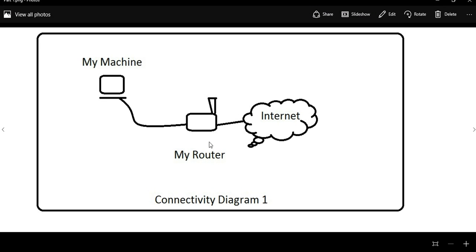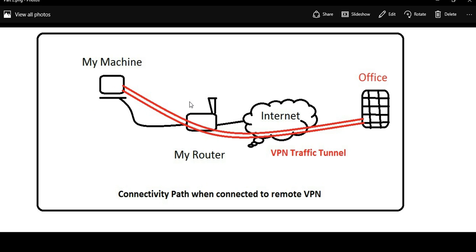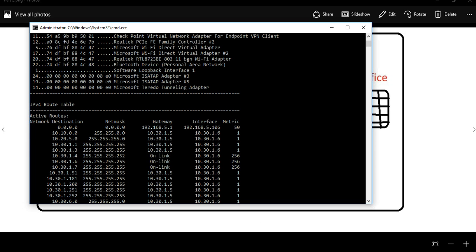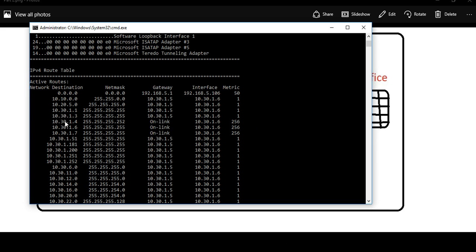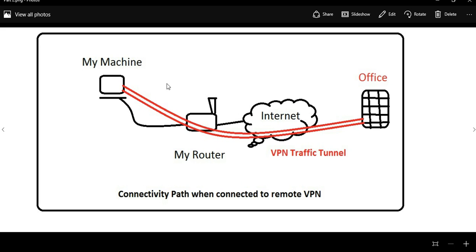Earlier, when not connected to the VPN, all traffic went from this machine to the router to the internet. Now that I'm connected to the VPN, specific destination traffic goes through a secure tunnel formed between my machine and the office interface over the internet. Any traffic with destination in the 10.30, 10.20, or 10.10 ranges — all VPN-related traffic — goes through this tunnel. Other normal traffic still goes from the router to the internet and does not reach the office end.